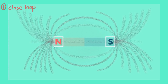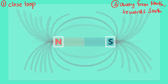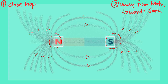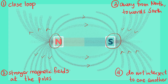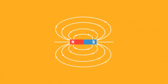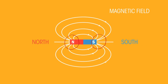The field lines will always form a closed loop around a bar magnet, and the direction of the field lines will always point away from the north and towards the south pole. We also see that more iron powders are attracted at the poles of the bar magnet. Therefore, we can conclude that the magnetic field is stronger at the poles, and the lines do not intersect one another. Closer magnetic field lines at the poles indicate a stronger magnetic field.